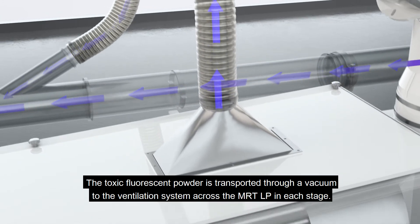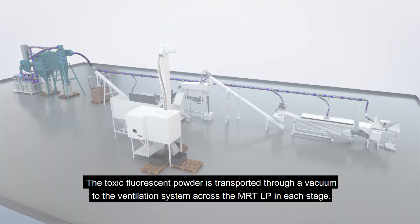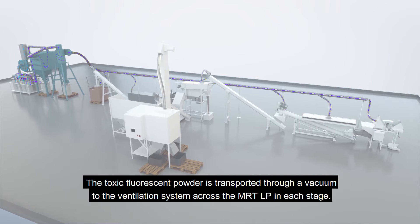The toxic fluorescent powder is transported through a vacuum to the ventilation system across the MRT LP in each stage.